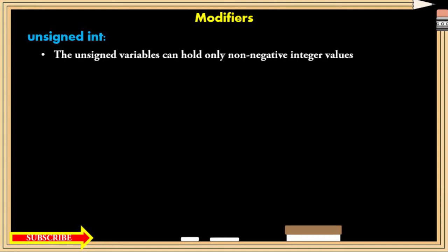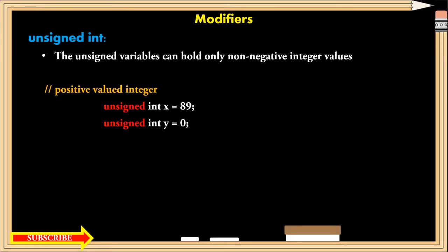And unsigned int. The unsigned variable can hold only non-negative integer values. For example, you can see x can store 89 which is a positive value and y can store 0 because integer includes 0 also.